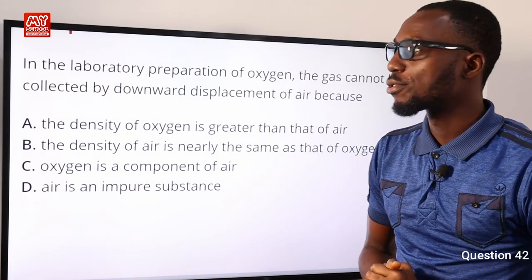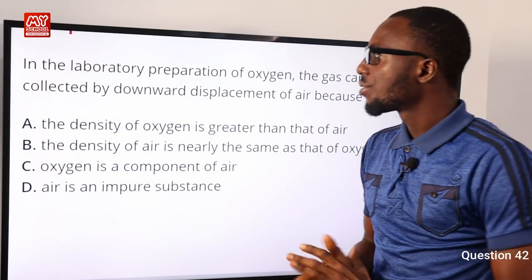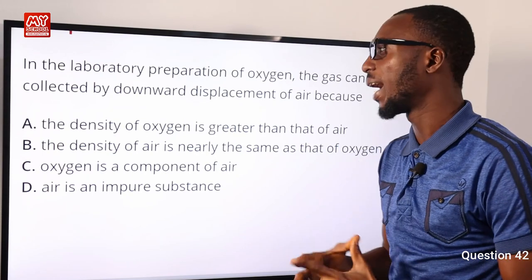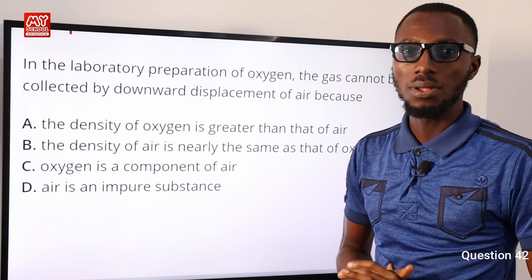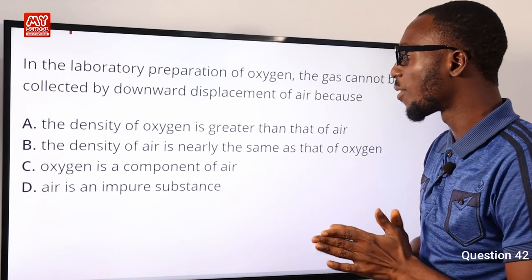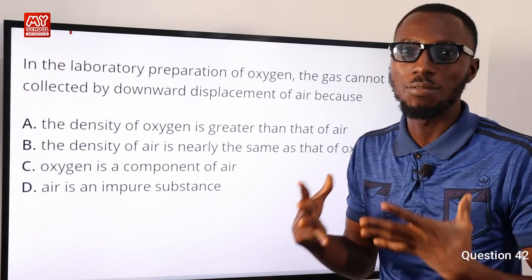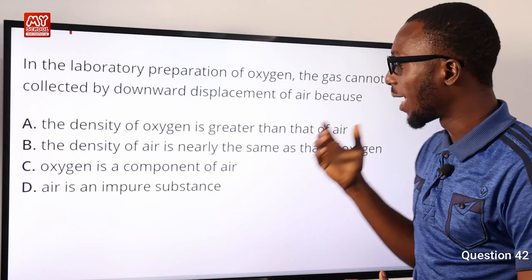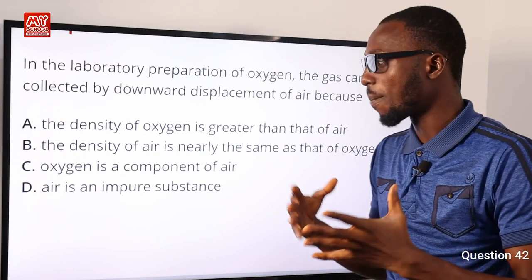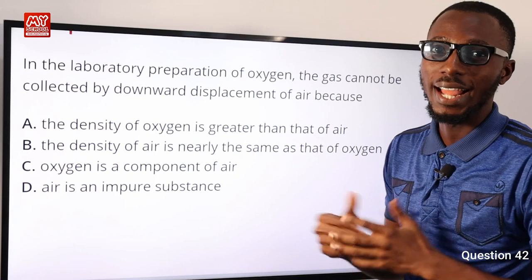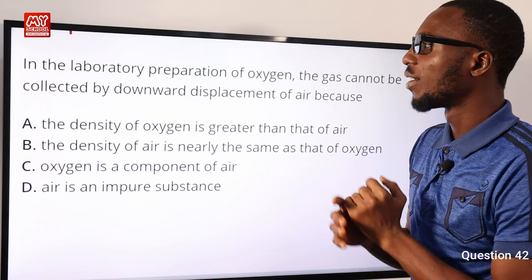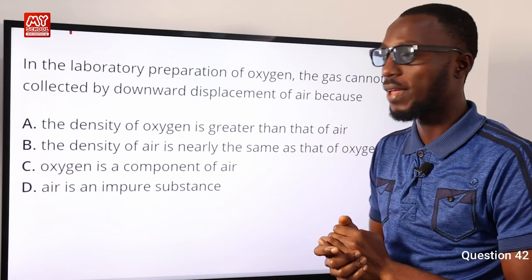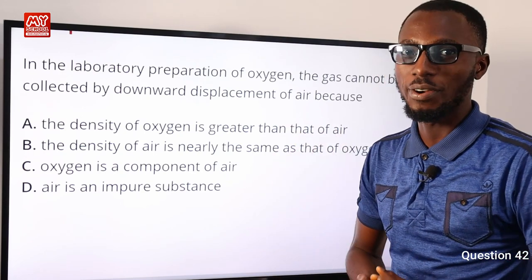Question 42. In the laboratory preparation of oxygen, the gas cannot be collected by downward displacement of air because the density of air (1.225 g/L) is nearly the same as that of oxygen (1.429 g/L) — they are very close. That is why we cannot collect oxygen by downward displacement of air. Option B is correct.